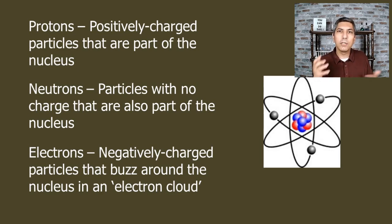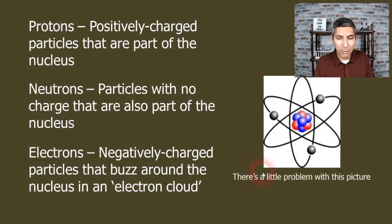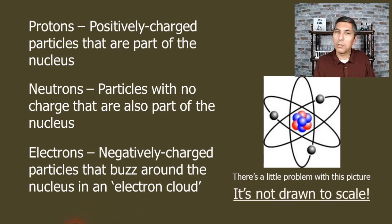Generally speaking, protons and neutrons are about the same size as each other. Electrons are much much smaller than protons and neutrons. Now like I said, there is a problem with this little picture that we have often seen that's supposed to represent atoms. The fact is it is absolutely not drawn to scale. In fact, it's kind of difficult to draw an atom to scale.